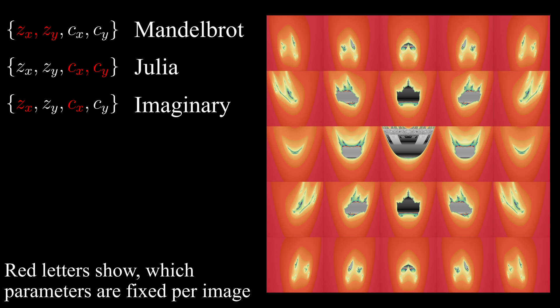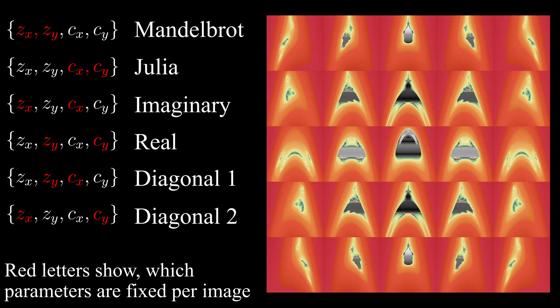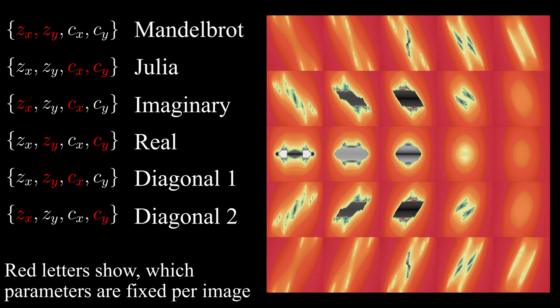Firstly, we can hold the real components of both z and c constant and vary the imaginary over the images, giving us the family of imaginary sets. Conversely, we can also hold the imaginary components constant and vary the real ones, giving us the family of real sets. Then, there are two diagonal cases, in which we hold the real component of z and the imaginary component of c, or the imaginary component of z and real component of c constant.